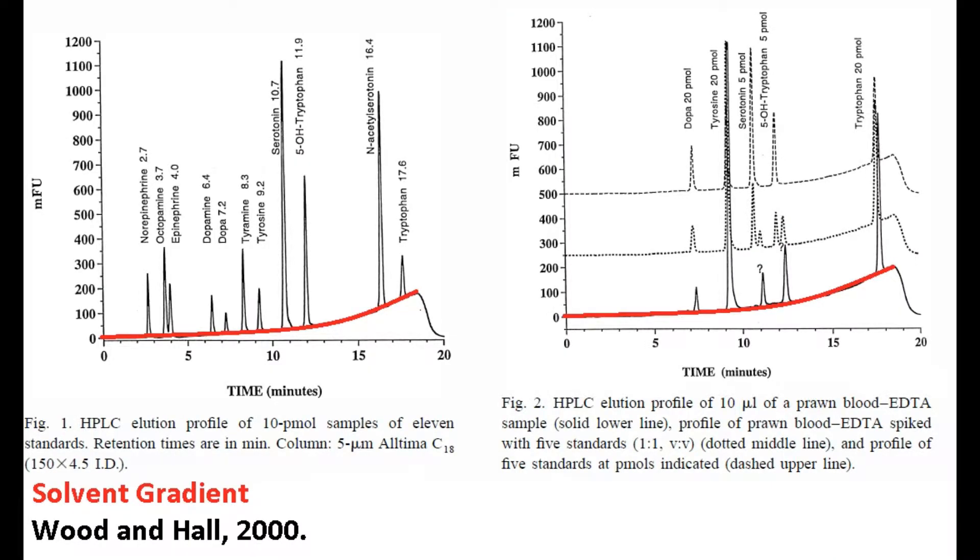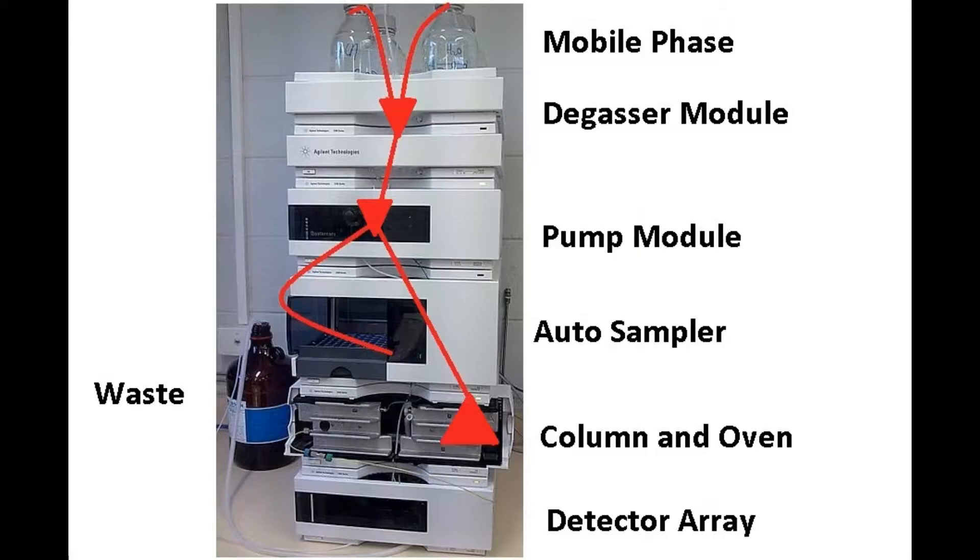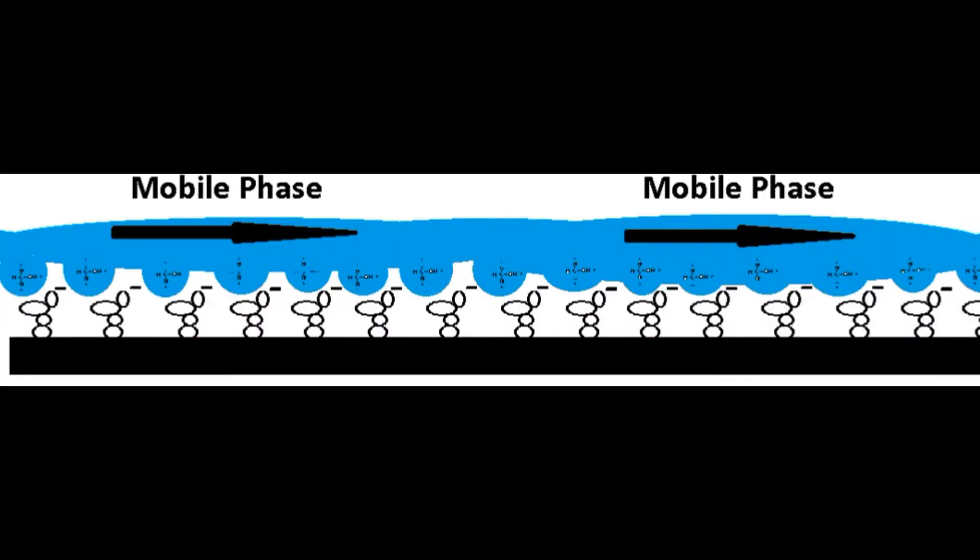This creates a flow rate, and the sample enters into the column with the constant supply of mobile phase. The mobile phase continues to pass over the column surface, as it has already been exposed to the polar solution. The constant supply of mobile phase pushes everything in the line further into the machine and attempts to force the sample out of the column.